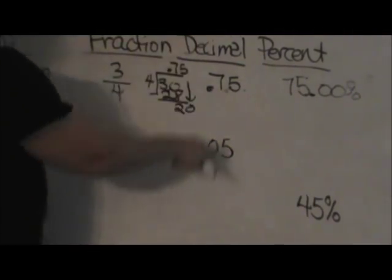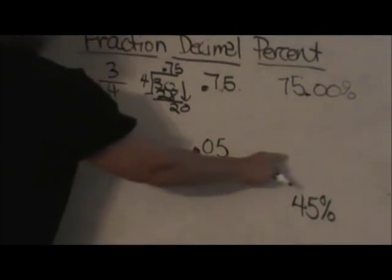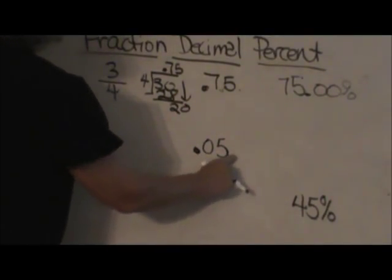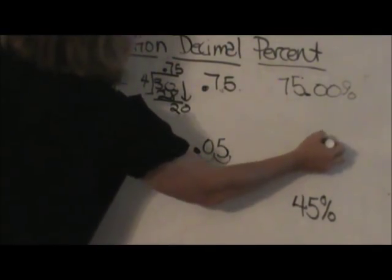Now I'm going to do this chart, but I'm actually going to start from a decimal. So decimal to percent. I'm just going to do my two moves. One, two. So this is just five percent.